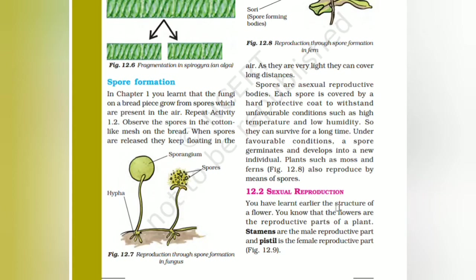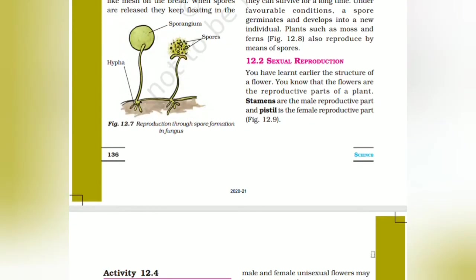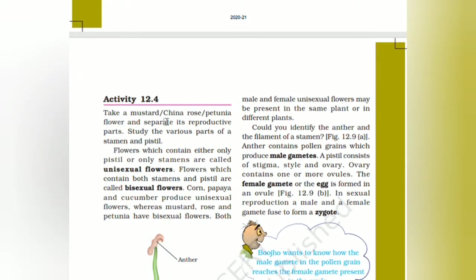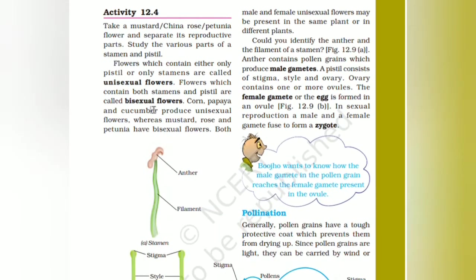Sexual reproduction: the flower is the reproductive part of the plant. Stamens are the male reproductive part and the pistil is the female reproductive part. Take mustard, china rose, and petunia flowers and separate these reproductive parts. Flowers which contain either only a pistil or only stamens are known as unisexual flowers. Flowers which contain both stamens and pistil are known as bisexual flowers. Corn, papaya, and cucumber produce unisexual flowers, whereas mustard, rose, and petunia have bisexual flowers.